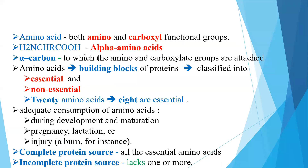Both functional groups are attached to the same carbon atom known as the alpha carbon. Amino acids are classified on several bases. First is depending upon the polarity of the functional groups, divided into two groups: polar and non-polar. Polar amino acids mainly contain hydrophilic, that is charged amino acids — negatively charged ones include aspartic acid and glutamic acid, while positively charged ones include the basic amino acids histidine, lysine, and arginine.